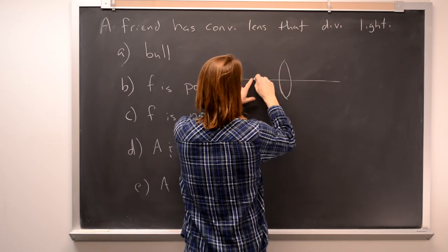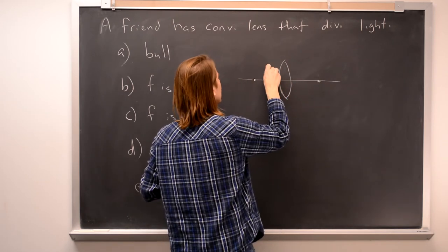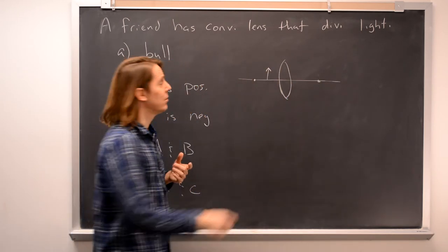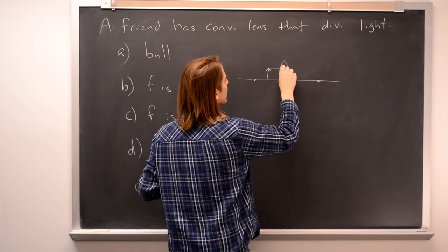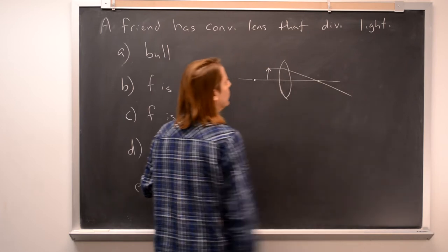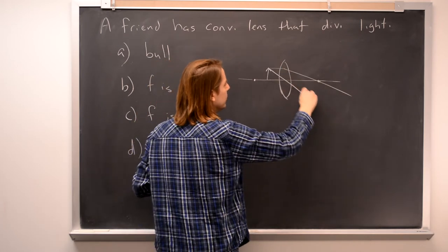So if the focal length is set here and you put your object inside the focal length, remember how we draw the rays in that case. This one will go and this one will always go through the focus. This one will always go straight to the center of the lens.